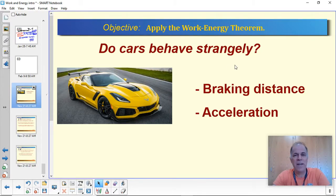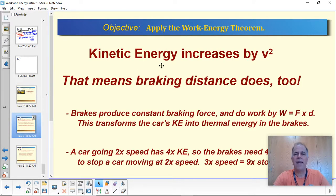So the question we have here is, do cars behave strangely? Cars are very familiar objects to us, but when we think about it, sometimes it's enlightening to think about why they do things that they do. We'll look at braking distance and the way that they accelerate. Now the common theme for both of these is that kinetic energy increases by the square of the speed. As you know, the equation for kinetic energy is one half m times the speed squared, one half mv squared. So if you double the speed, you quadruple the kinetic energy. If you triple the speed, the kinetic energy goes up by a factor of nine, because it's always the speed squared.